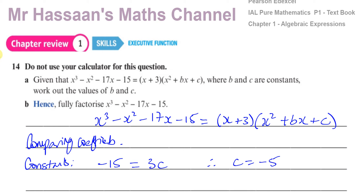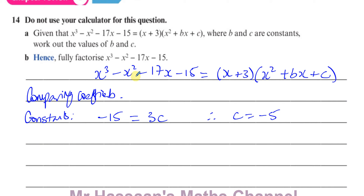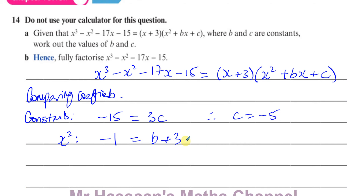Now I need to find b. I'll compare the x squared terms. On the left side there's minus 1 x squared. On the right side, the ways to get an x squared term are: x times bx giving bx squared, and 3 times x squared giving 3x squared. So we have minus 1 equals b plus 3, therefore b equals minus 1 minus 3, which is negative 4.